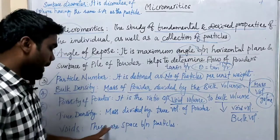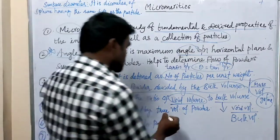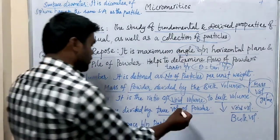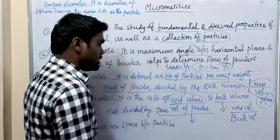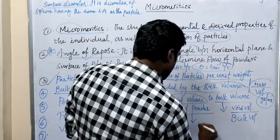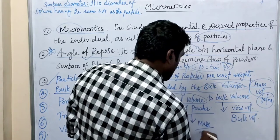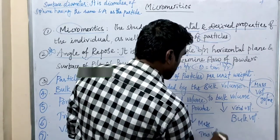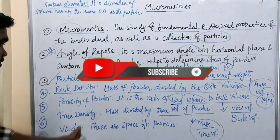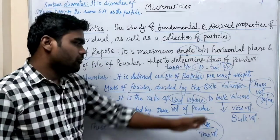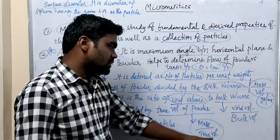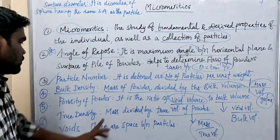Next, true density. It is defined as mass divided by the true volume of powder, written as the ratio of mass to true volume. That is about true density.